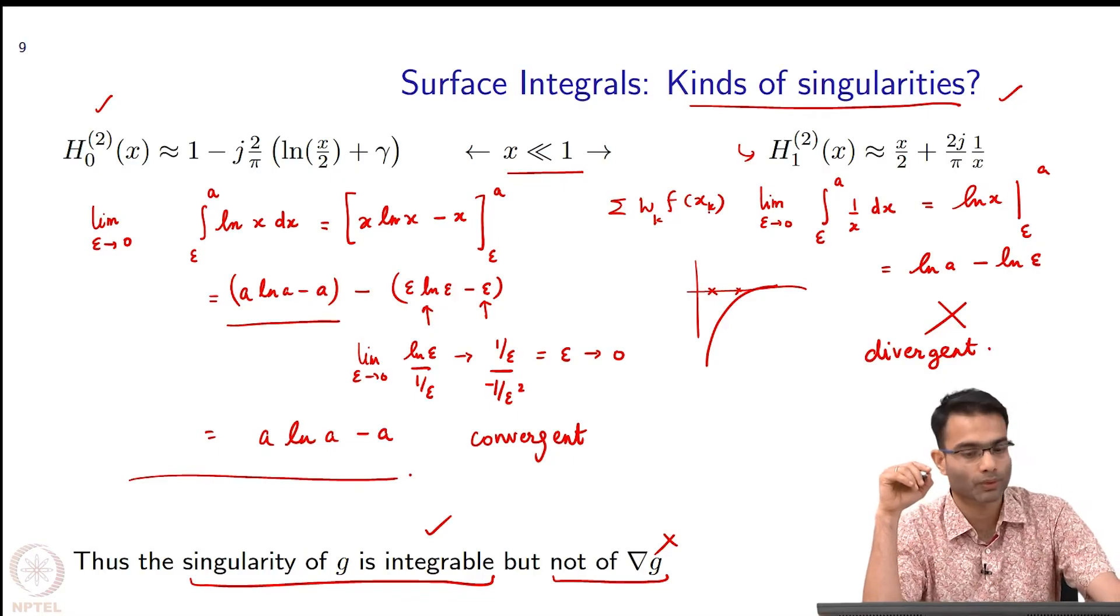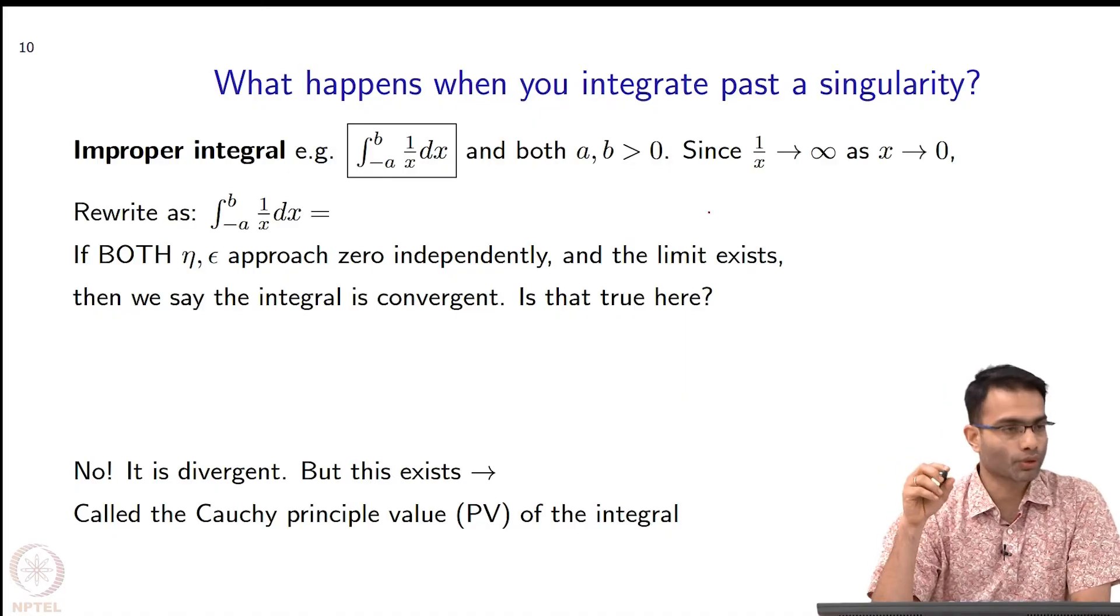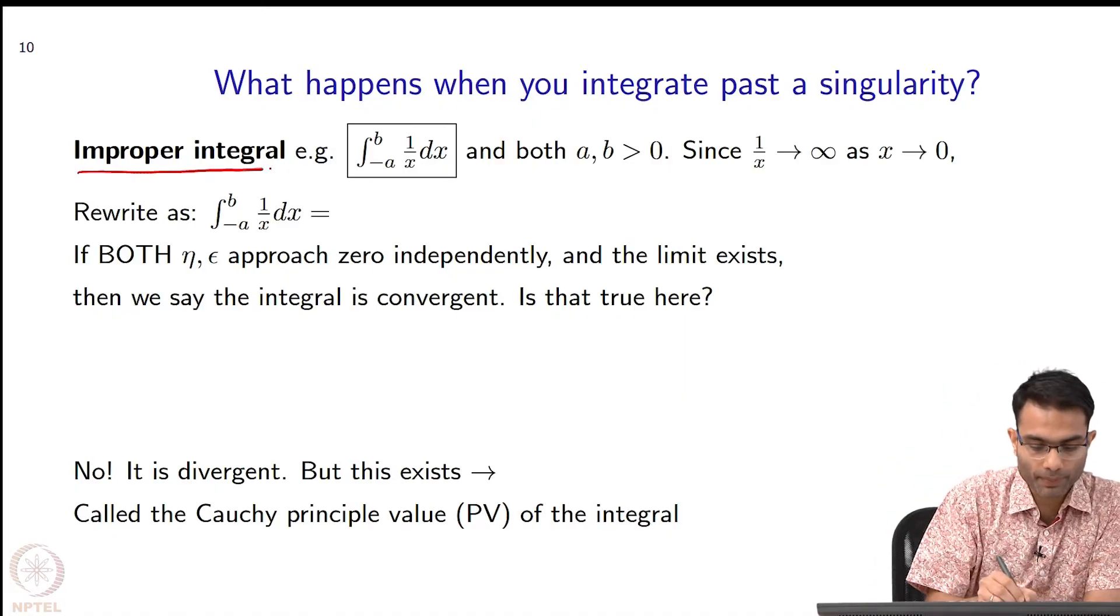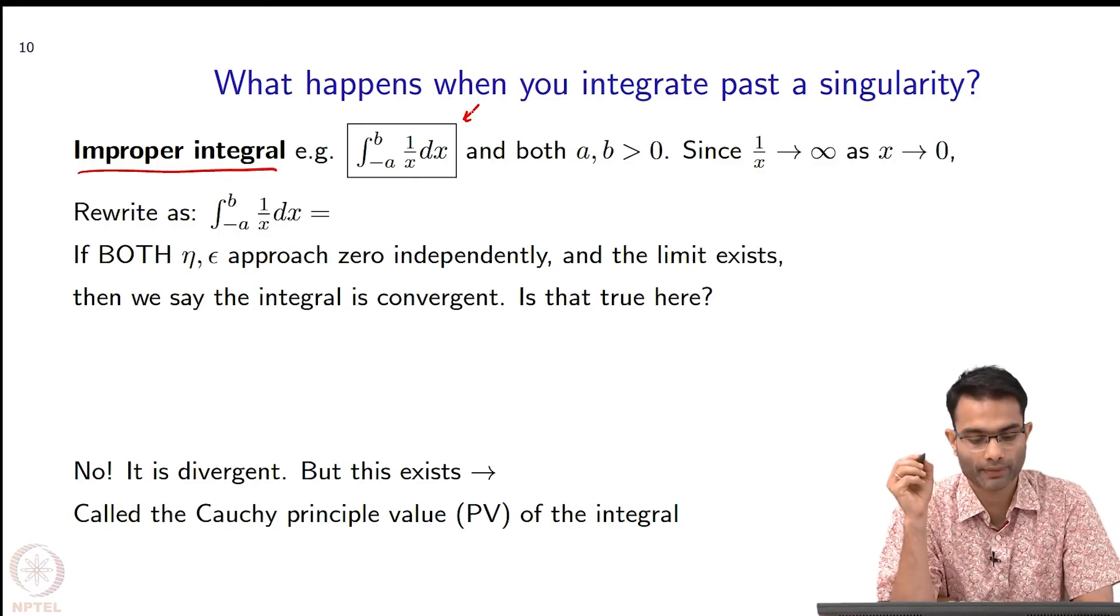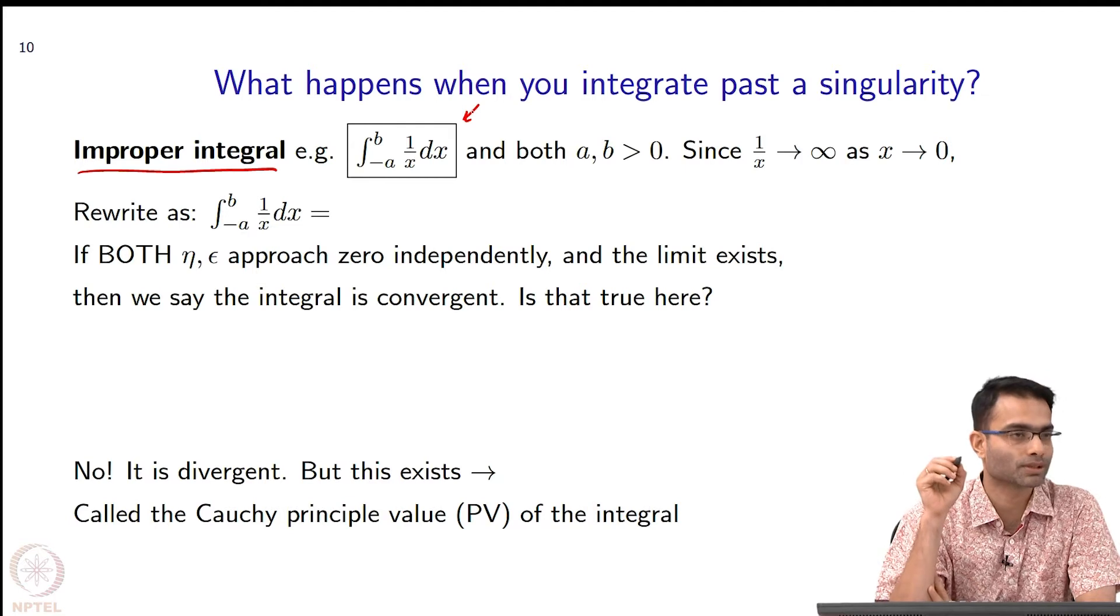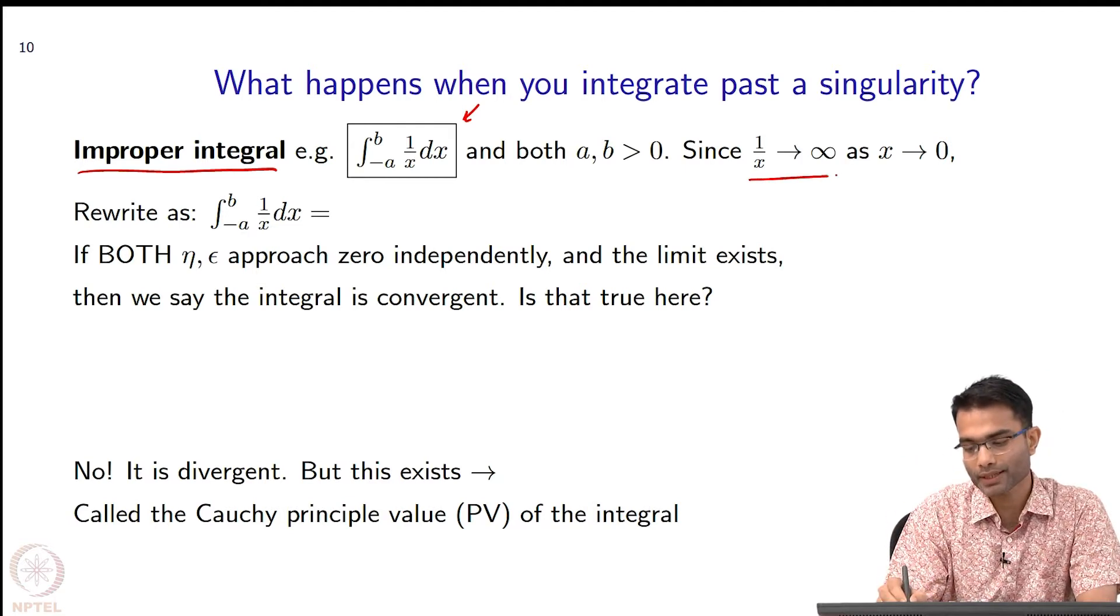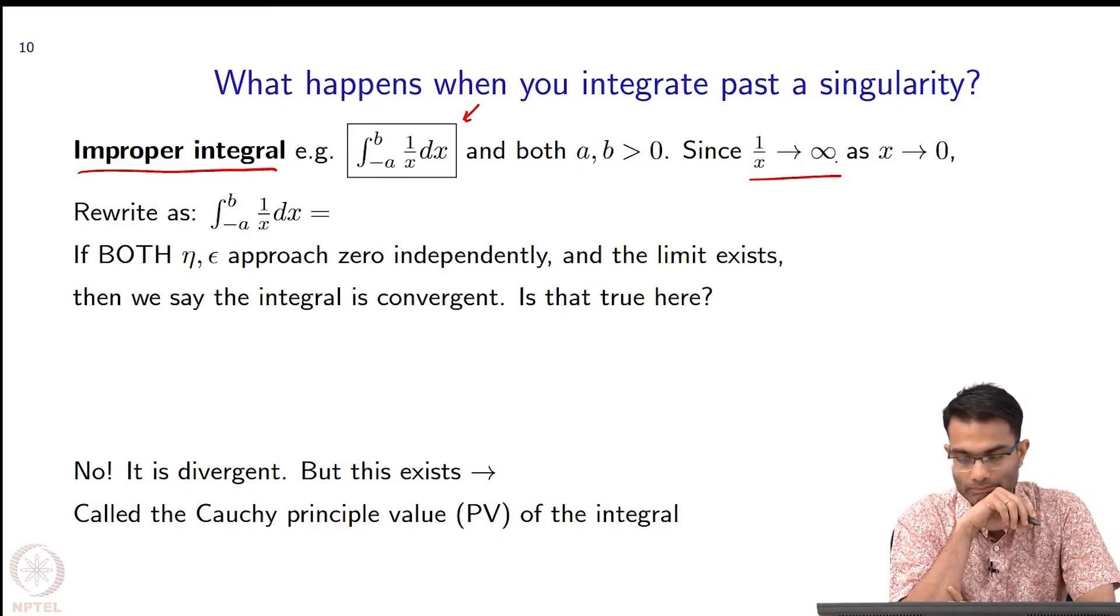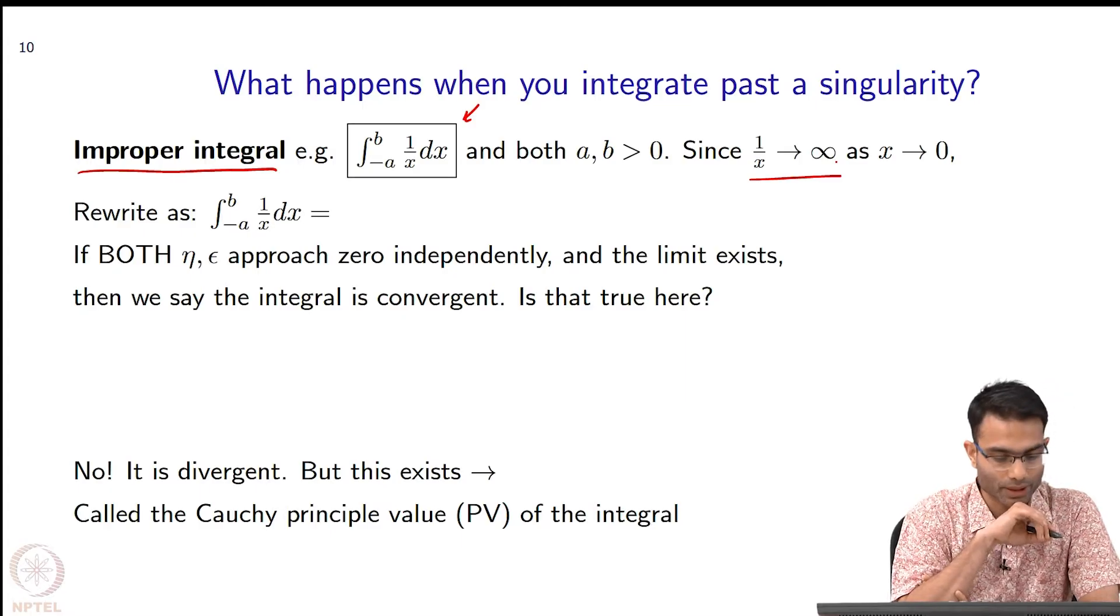Now let us see what we do about this. This kind of integral which I showed you is what is called an improper integral. This is the best example I have: an integration from minus a to b of some function which is blowing up. Since there is a point in between which blows up at infinity, this is called an improper integral. This is just the definition.